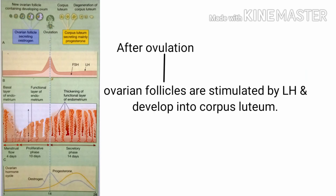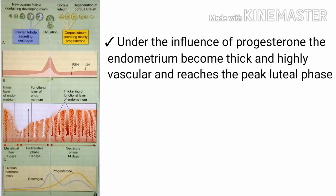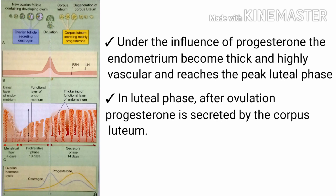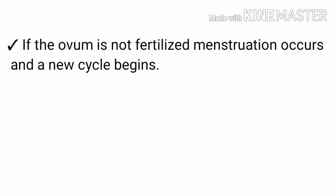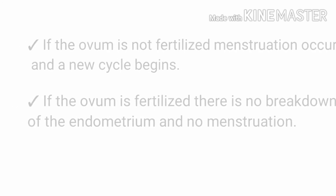Now we will learn about the third phase — the secretory phase. Immediately after ovulation, the cells lining the ovarian follicle are stimulated by luteinizing hormone and develop into the corpus luteum. It will produce progesterone and estrogen. Under the influence of progesterone, the endometrium becomes thick and highly vascular and reaches the peak luteal phase. After ovulation, progesterone is secreted by the corpus luteum. If the ovum is not fertilized, menstruation occurs and a new cycle begins. If the ovum is fertilized, there is no breakdown of the endometrium and no menstruation occurs.